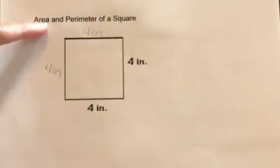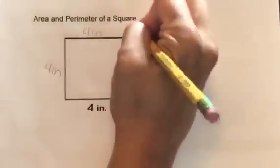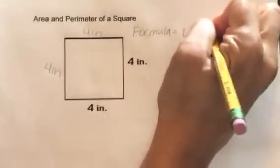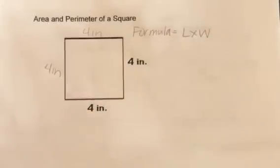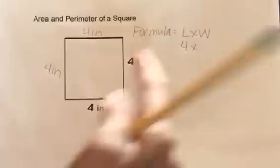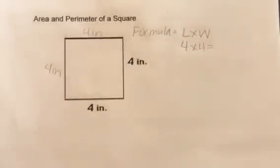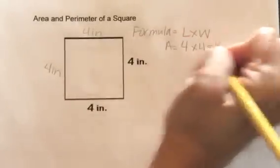Remember that the formula for the area of a square is length times width. So the length is going to be how long it is, so it's 4 inches, times its width, which is also 4 inches. And 4 times 4 is 16.